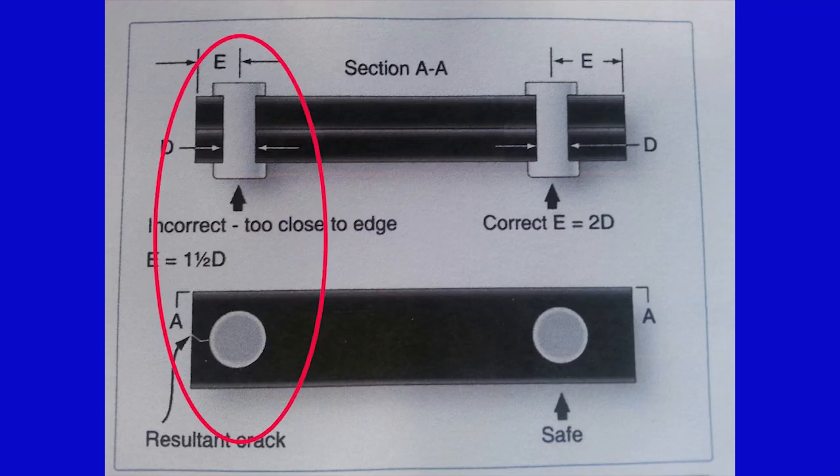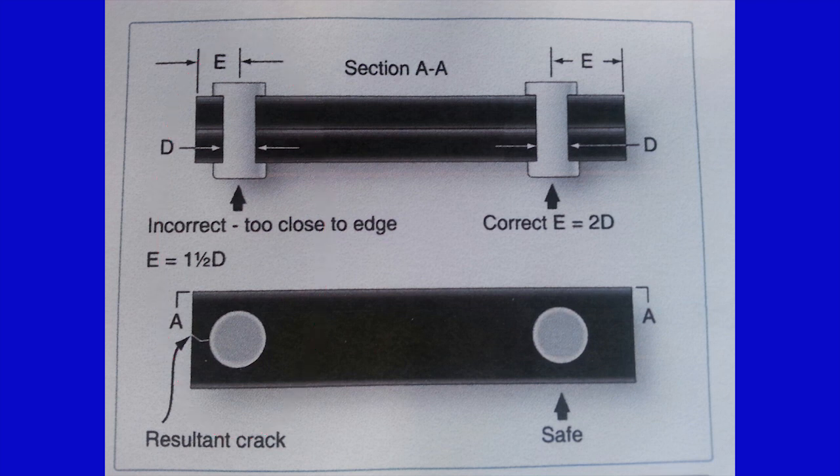Why do we care about edge distance? If rivets are placed too close to the edge of the sheet, the sheet may crack or pull away from the rivets under load.